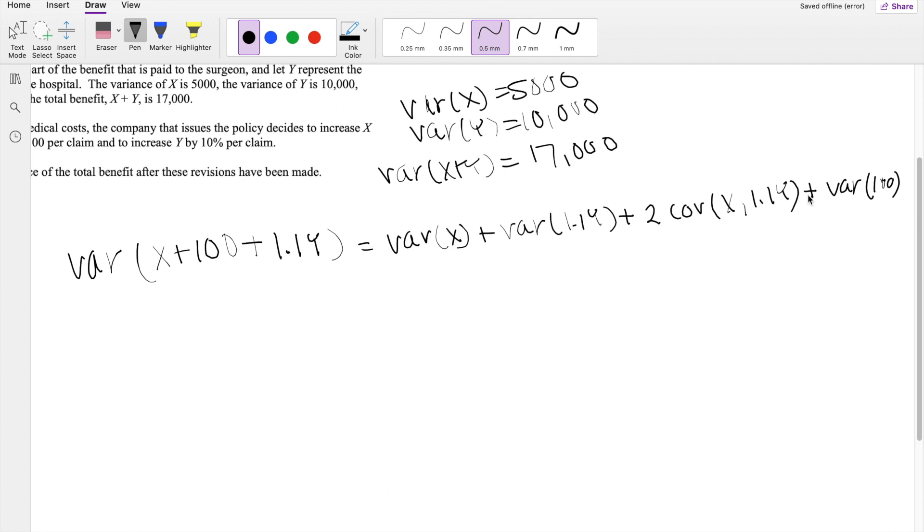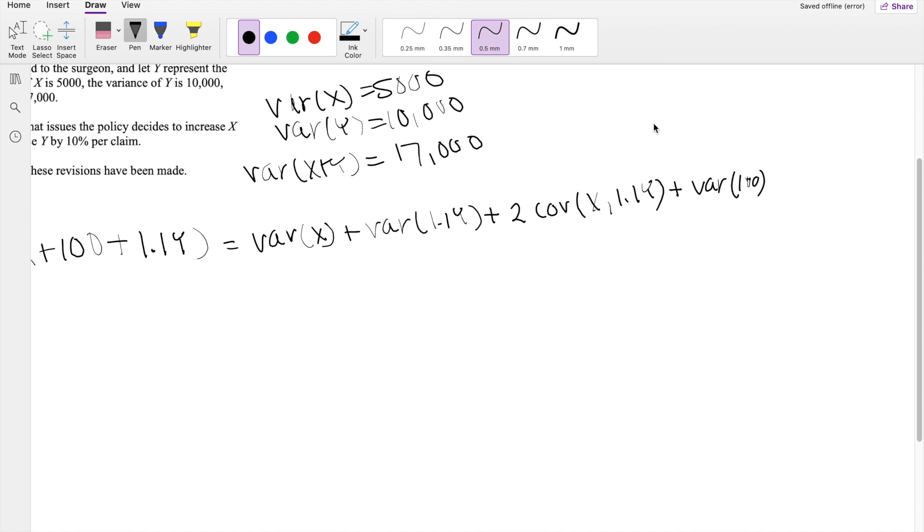I guess we can also write down the variance of 100 just to make it formal. But the thing is, a variance of constant is just 0 because it doesn't really matter. Variance measures variability of variables. It doesn't matter if it's here or here. Shifting it this way or that way, a constant does not make a difference in variance. So we can actually just say this is equal to 0. Okay, anyways,